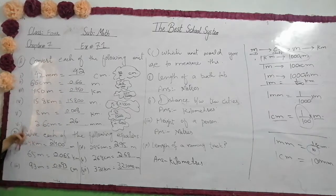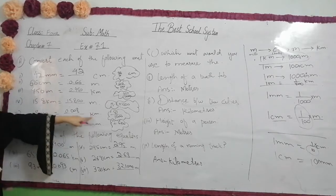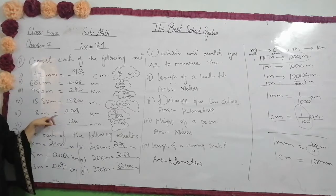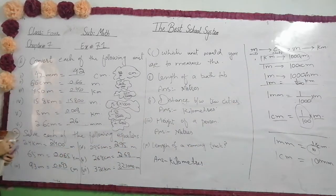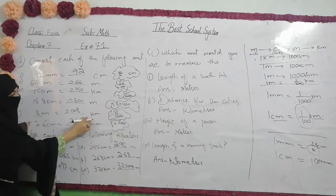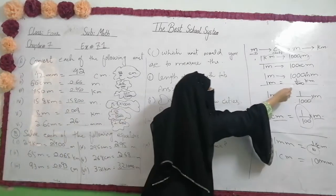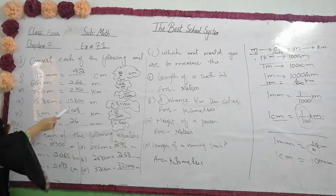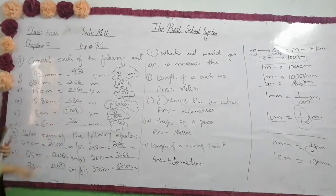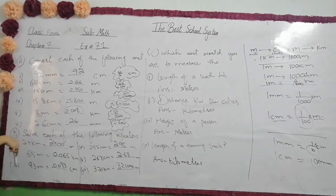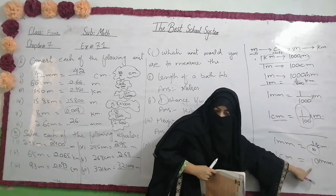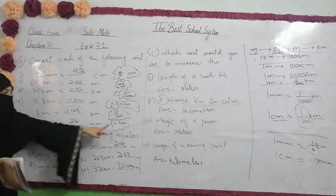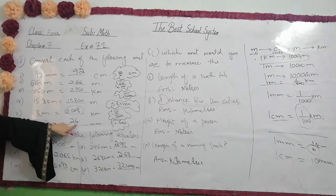Question number 5: you have to go to kilometers, so you divide by 1000. Same formula — you divide 8 by 1000, then you will have the answer. Question number 6 is 2.6 cm and you will have to convert to millimeters. You will multiply by 10. So 2.6 into 10 gives you 26.